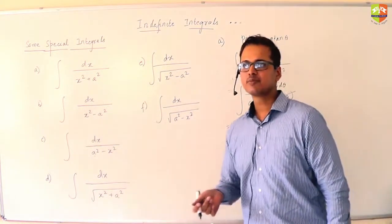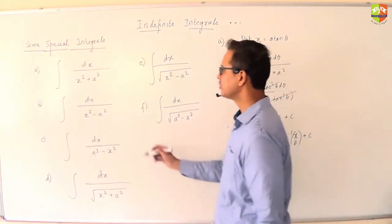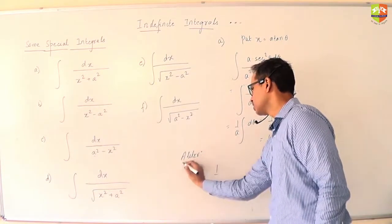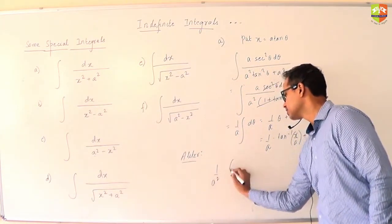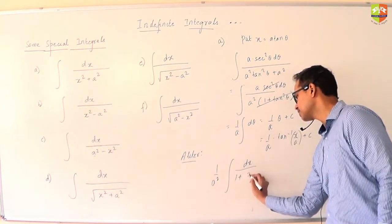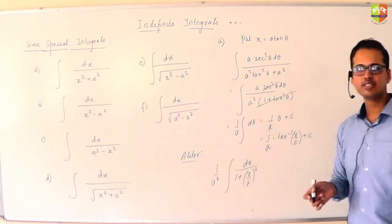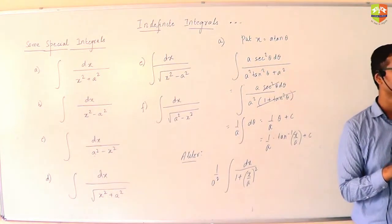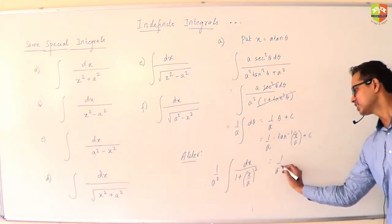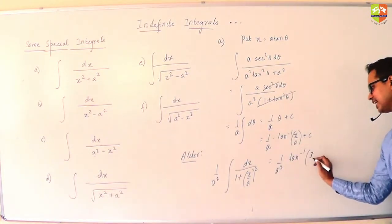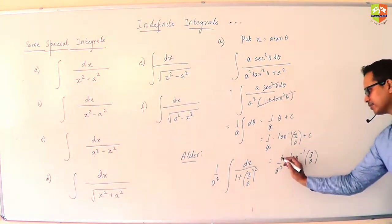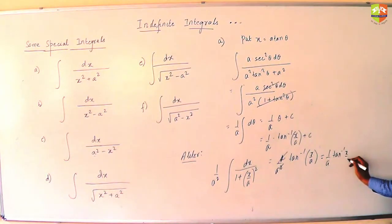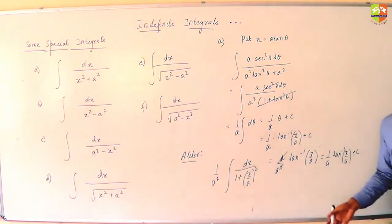Now, I could have also solved this problem by doing one simple activity. Take 1 by a squared common. So you will get dx by 1 plus x by a whole squared. Now, do you remember what I was giving you? Integral anti-derivatives. So can I say it is 1 by a squared tan inverse of x by a divided by 1 by a. Divided by 1 by a means a will go up, giving you 1 by a tan inverse x by a. This is an alternative way to get the same result.